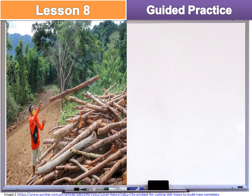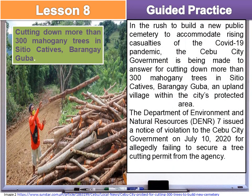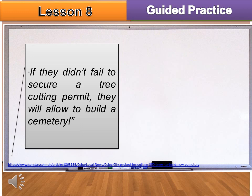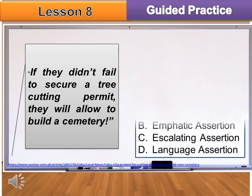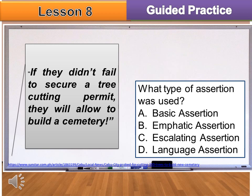Let's try a few items as practice exercise. Read the text silently. Choose the letter of the best type of assertion in each statement and use emoticons to express your reaction. Statement: 'If they didn't fail to secure a tree-cutting permit, they will be allowed to build a cemetery.' What type of assertion was used? A. Basic assertion, B. Emphatic assertion, C. Escalating assertion, D. Language assertion. The answer is letter C — Escalating Assertion — because the statement was firm. The reader was satisfied because the city could have a cemetery if they comply with the law.